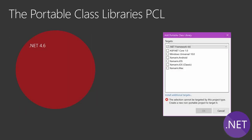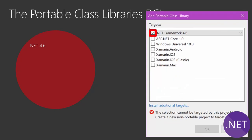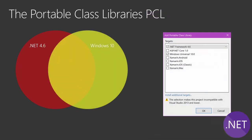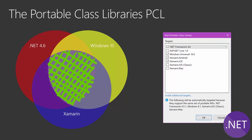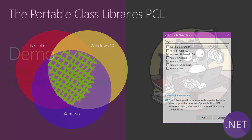If I summarize Portable Class Libraries: you start with .NET 4.6, but if you add Windows 10 UWP and then add Xamarin, you end up with the intersection of what you just added — the available APIs are the least common denominator across all targeted platforms.